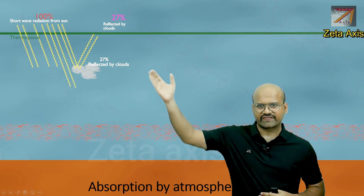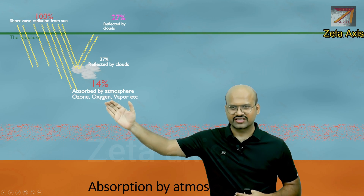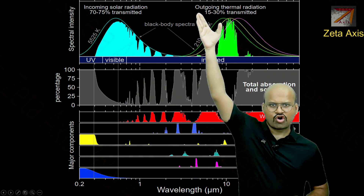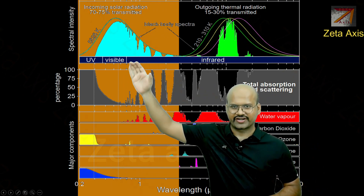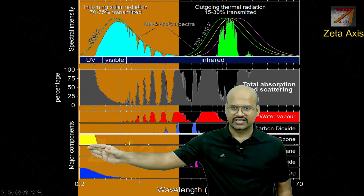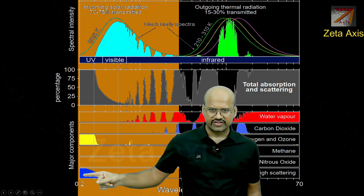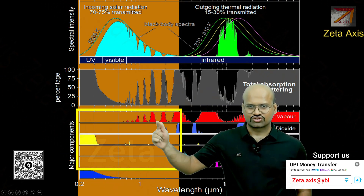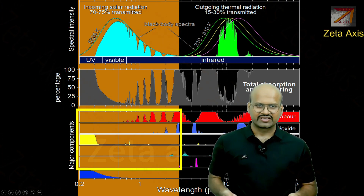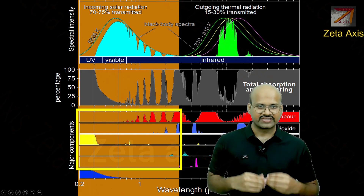The rest of the radiation not reflected by clouds reaches the lower atmosphere. Here, almost 14% of the incoming solar radiation is absorbed by ozone, oxygen, and water vapour. As we can see in this spectrum diagram, water vapour, carbon dioxide, oxygen, and ozone absorb significant portions of the incoming solar radiation. This 14% does not reach Earth's surface but is absorbed by the atmosphere itself.